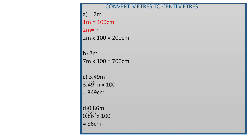The first one: 2 metres. You know that 1 metre is 100 centimetres. So in order to convert to centimetres, we need to multiply by 100. Therefore, we have 2 metres multiplied by 100, which is equal to 200 centimetres.